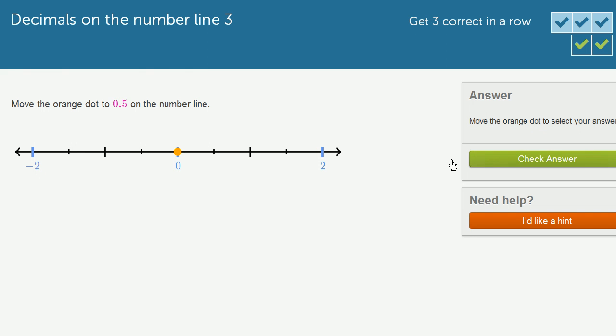Let's do one more of these. Move the orange dot to 0.5 on the number line. Well, once again, we have the same scale. It's important to always check the scale. And this right over here is 1. So 0.5 would be halfway. It's that little small mark right over there.